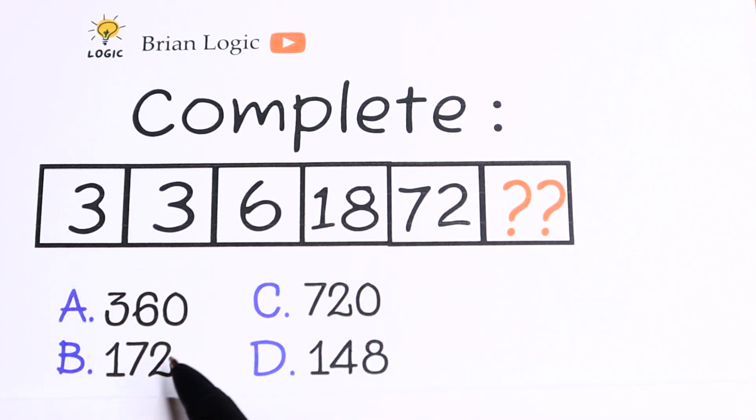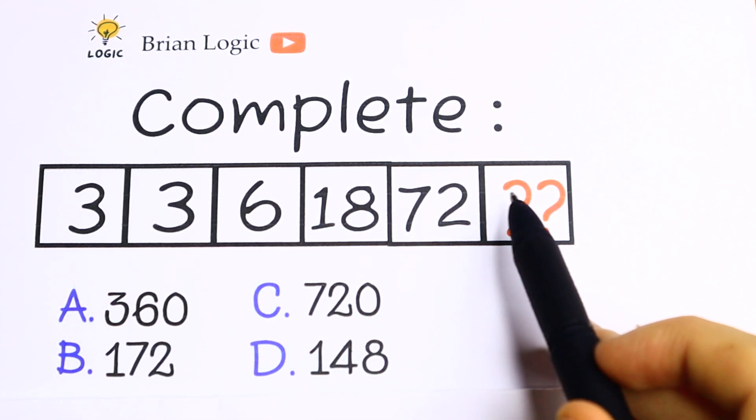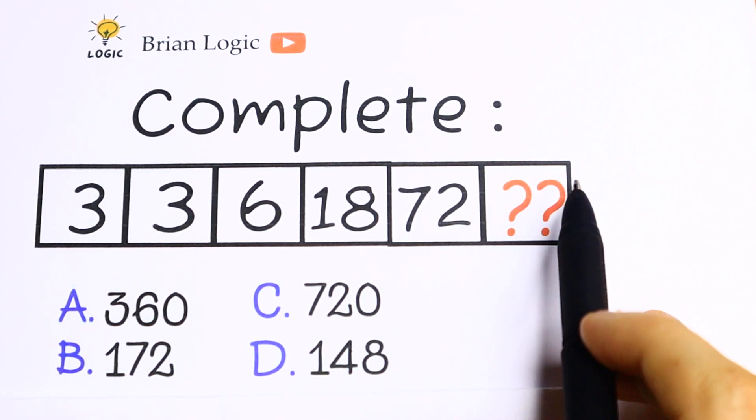So we have 3, 3, 6, 18, 72. Write your suggestion about the last number. What's the pattern between all of these numbers?